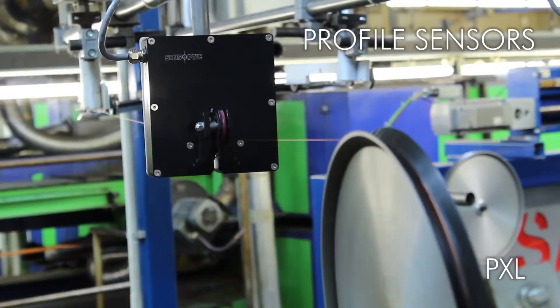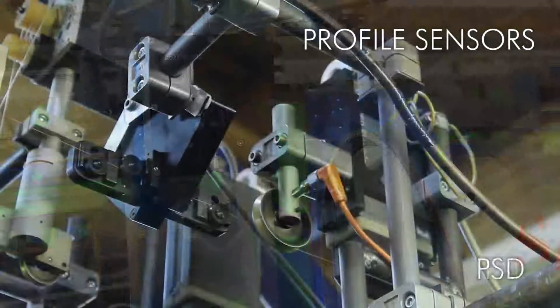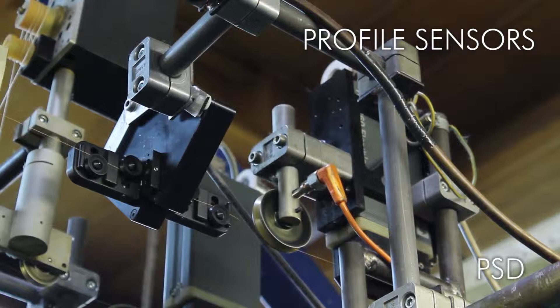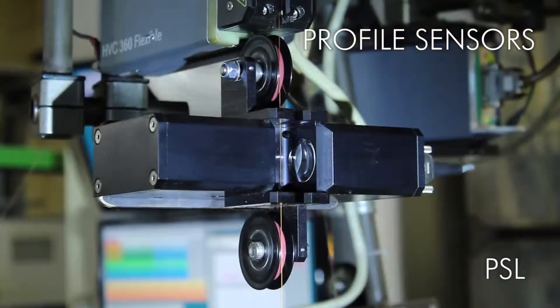Our profile sensors offer ultra-fast, non-contact detection of surface faults and diameter irregularities. Even at line speeds of 2000 meters per minute, they provide accurate measurement and characterization of micrometric defects in real time.